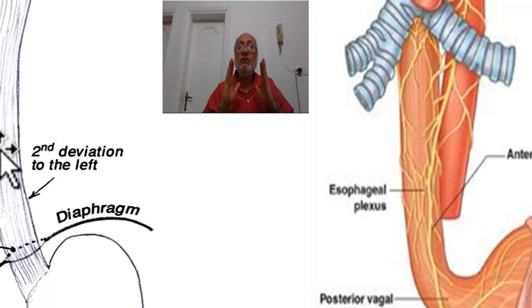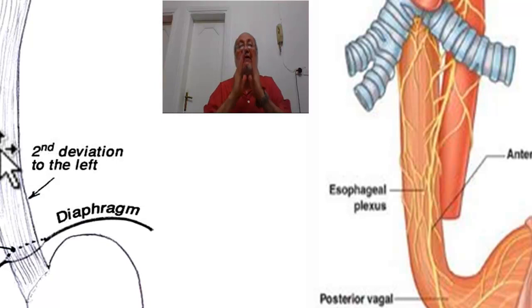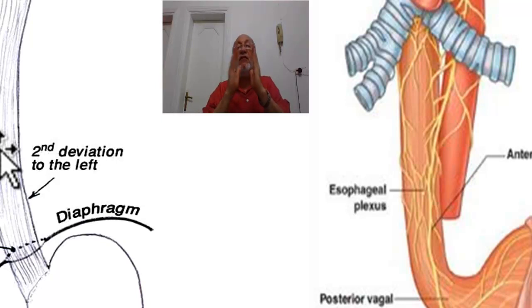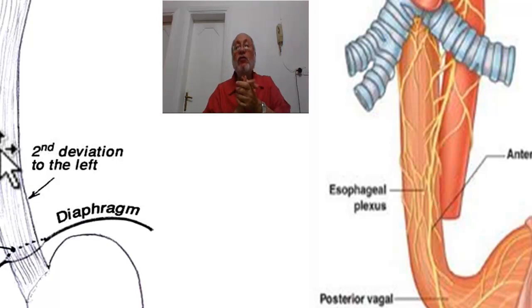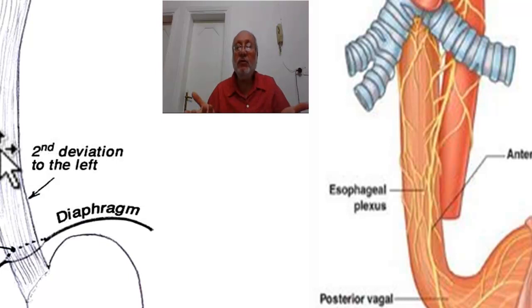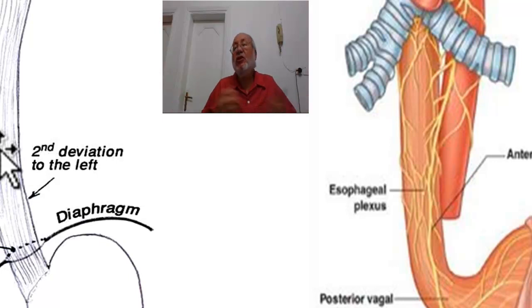Oesophageal distension: in surgery, distension means distal obstruction. Therefore, distal obstruction and distension of the oesophagus usually occur in achalasia of the oesophagus, leading to regurgitation. In vomiting, there is no oesophageal distension.